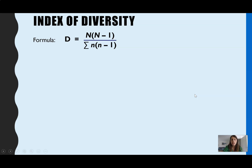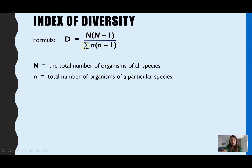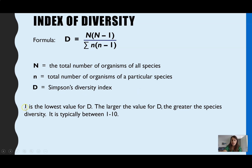We use Simpson's index of diversity to calculate this. Here's the formula, and you do not have to remember the formula itself for the A-level exam. However, what AQA won't give you is what all the components stand for — so that's what you need to remember. Capital N is the total number of organisms of all species present. Lowercase n is the population size of one species — the total number of organisms of that one species. You won't get a value lower than one, and the larger the value, the greater the species diversity. It typically falls between one and ten, most often between three and six.